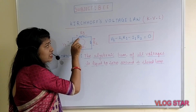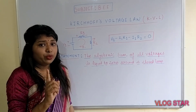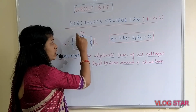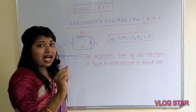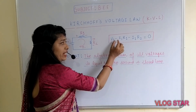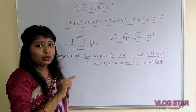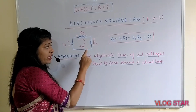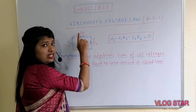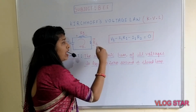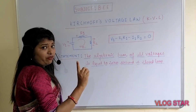Now applying the third sign convention over here: the direction of the current and the polarity assigned to the resistor are both in the same direction, so the voltage drop across this resistor is equal to −i × R. The current flowing in this circuit is i1 and the resistor is R1, so it is −i1 × R1.